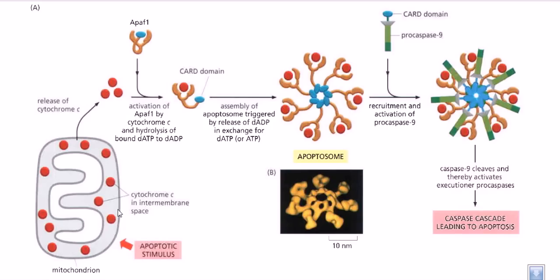Whenever cytochrome c transfers from the mitochondrial intermembrane space into the cytosol, it interacts with another important molecule called Apaf-1. They interact with each other and hydrolyze ATP into ADP, using the energy of ATP hydrolysis to attach Apaf-1 with cytochrome c. In its inactive state, Apaf-1 has its active site filled with a CARD domain, which helps more Apaf-1 molecules come together, arrange and attach themselves to make a complex. Normally this CARD domain sits on the active site to block the activity of Apaf-1.